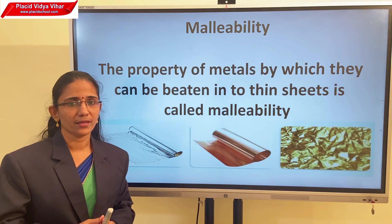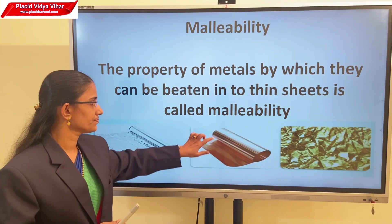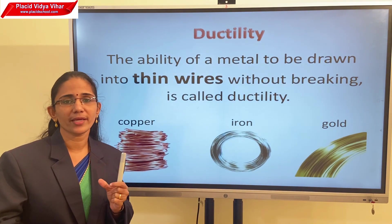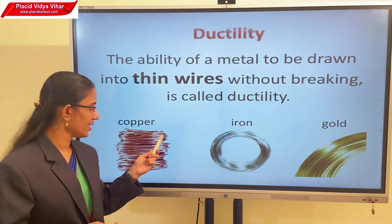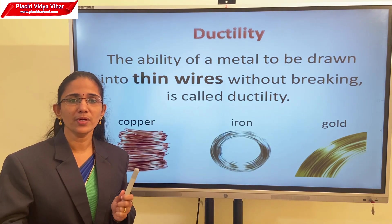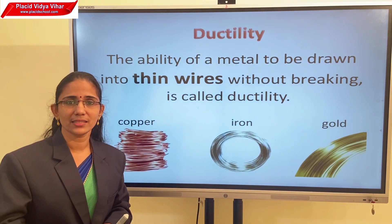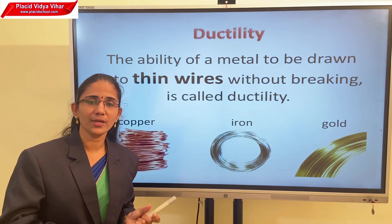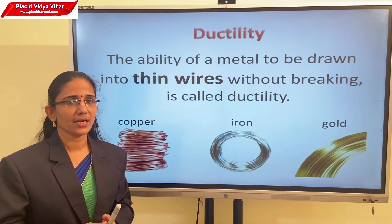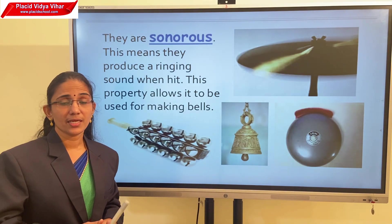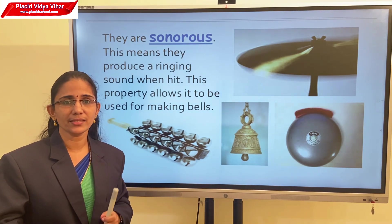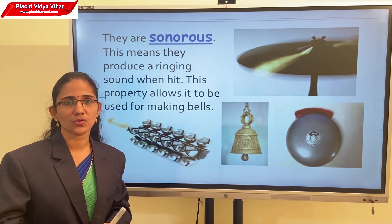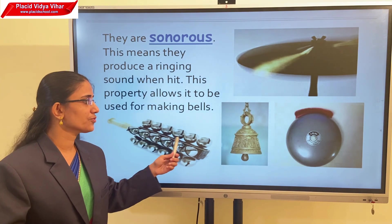Most of the metals are malleable. The next property is ductility. Ductility means the ability of a metal to be drawn into thin wire form. Gold, iron and copper wires are examples. Most of the metals can change shape into thin wire form — that property is called ductility, and most metals are ductile. Gold is the most malleable and ductile metal compared to any other metal.